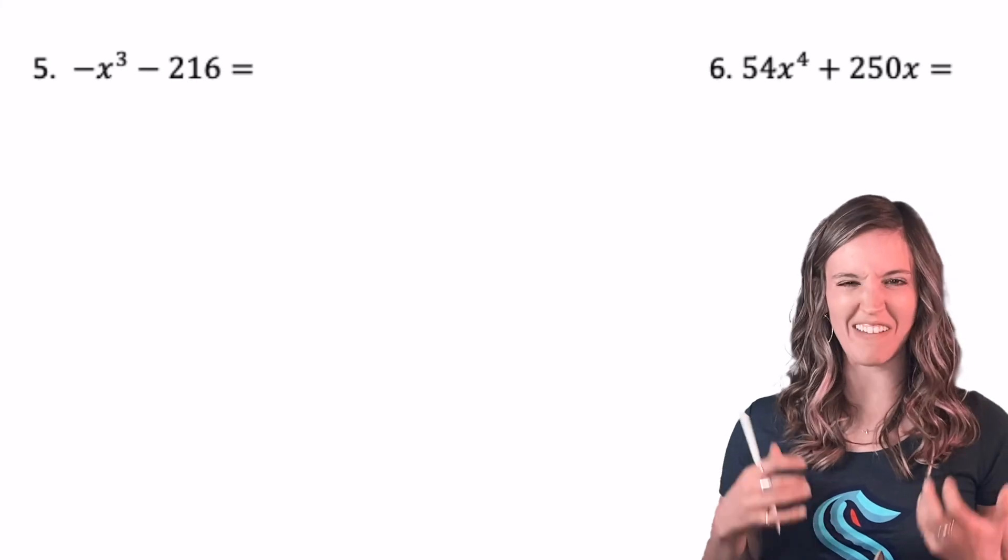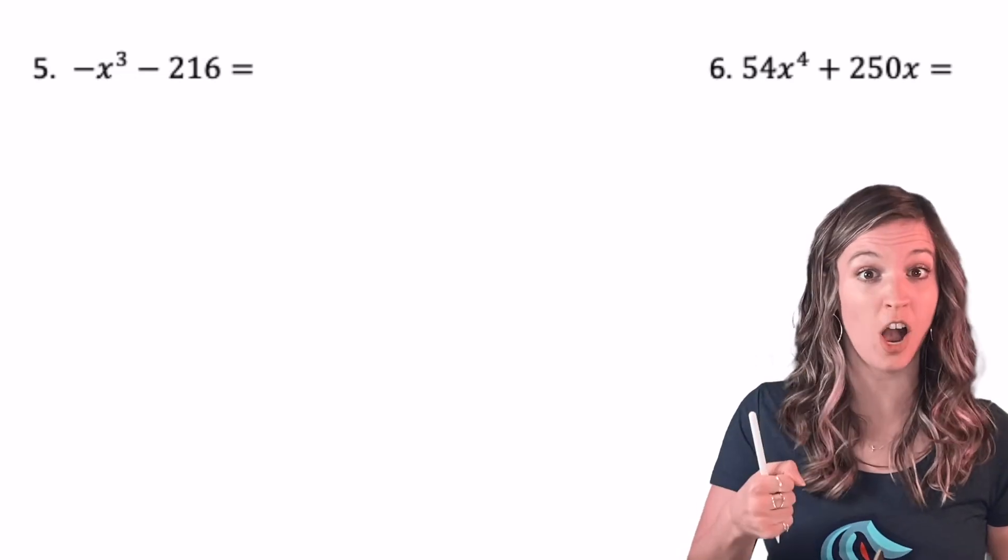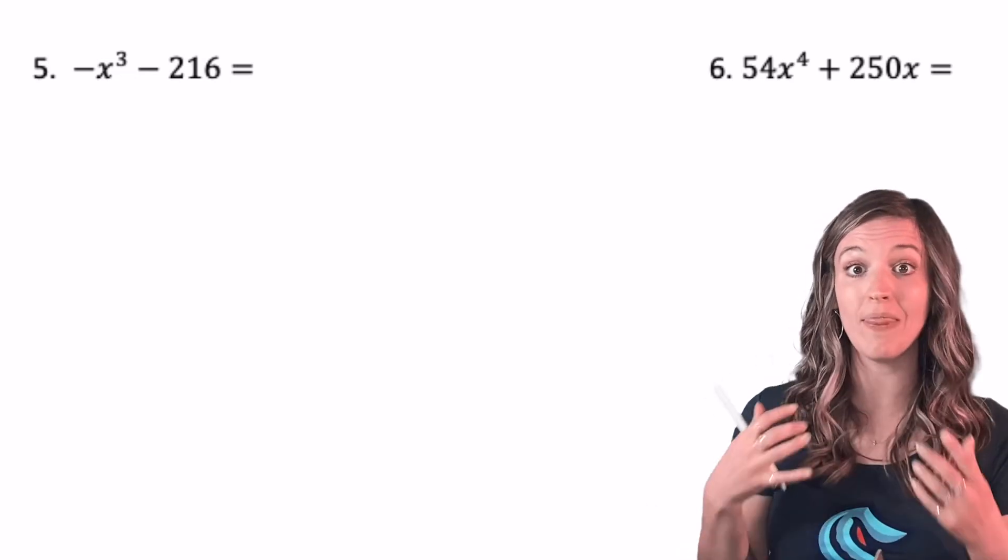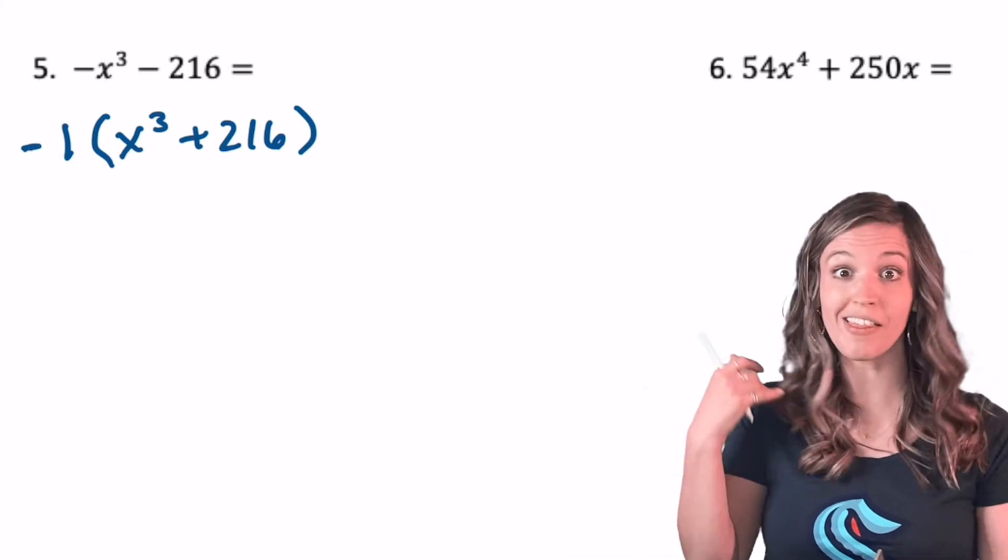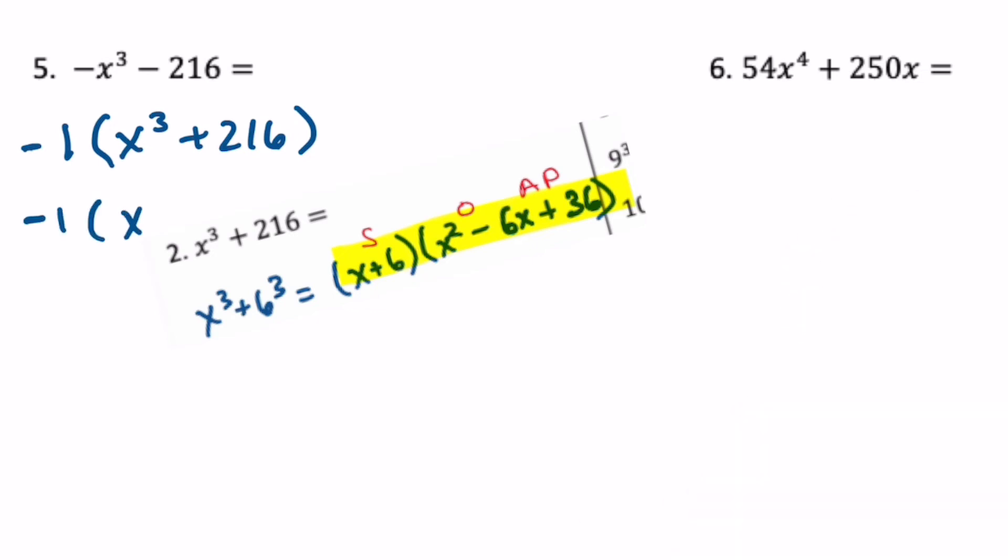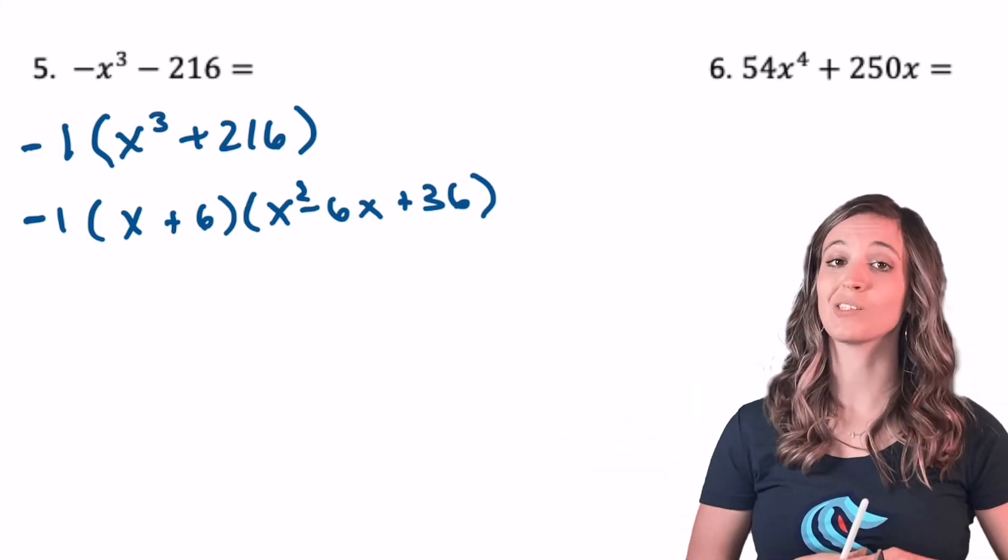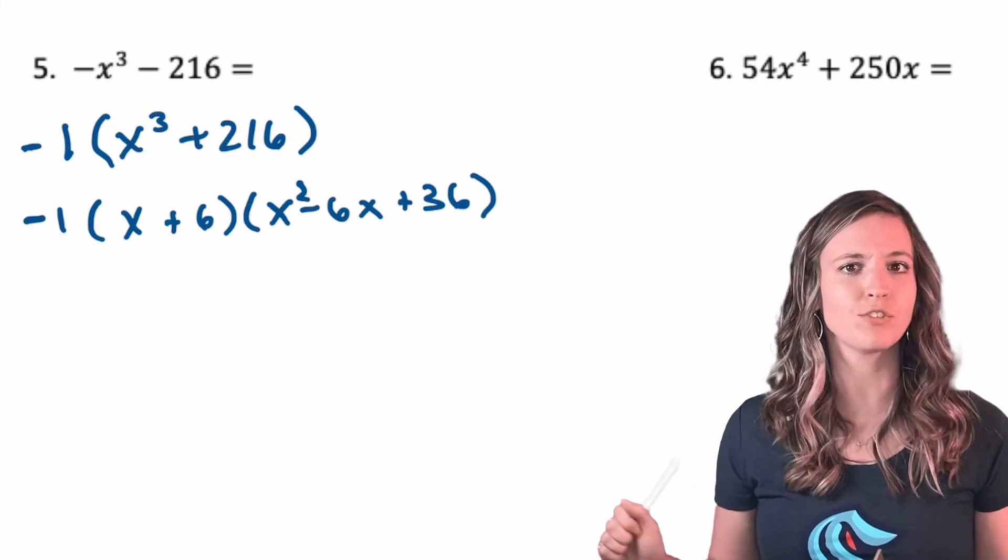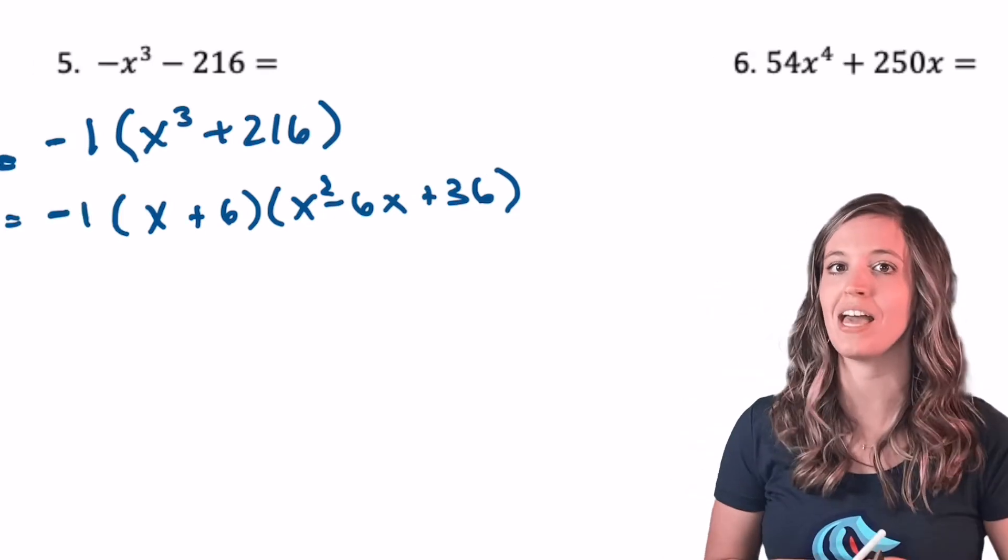Oh, looking at number five, I have that negative first term. That's a little different than the other ones. So maybe on this one I could start strong, factor out that negative sign, and then start using SOAP. All right, so now that I factored out that negative one, I've got x cubed plus 216. Huh, we already did that one in number two. All right, so I've got negative x plus six, x squared minus 6x plus 36. The only thing we have to really be careful about in this problem is to not drop that negative one.